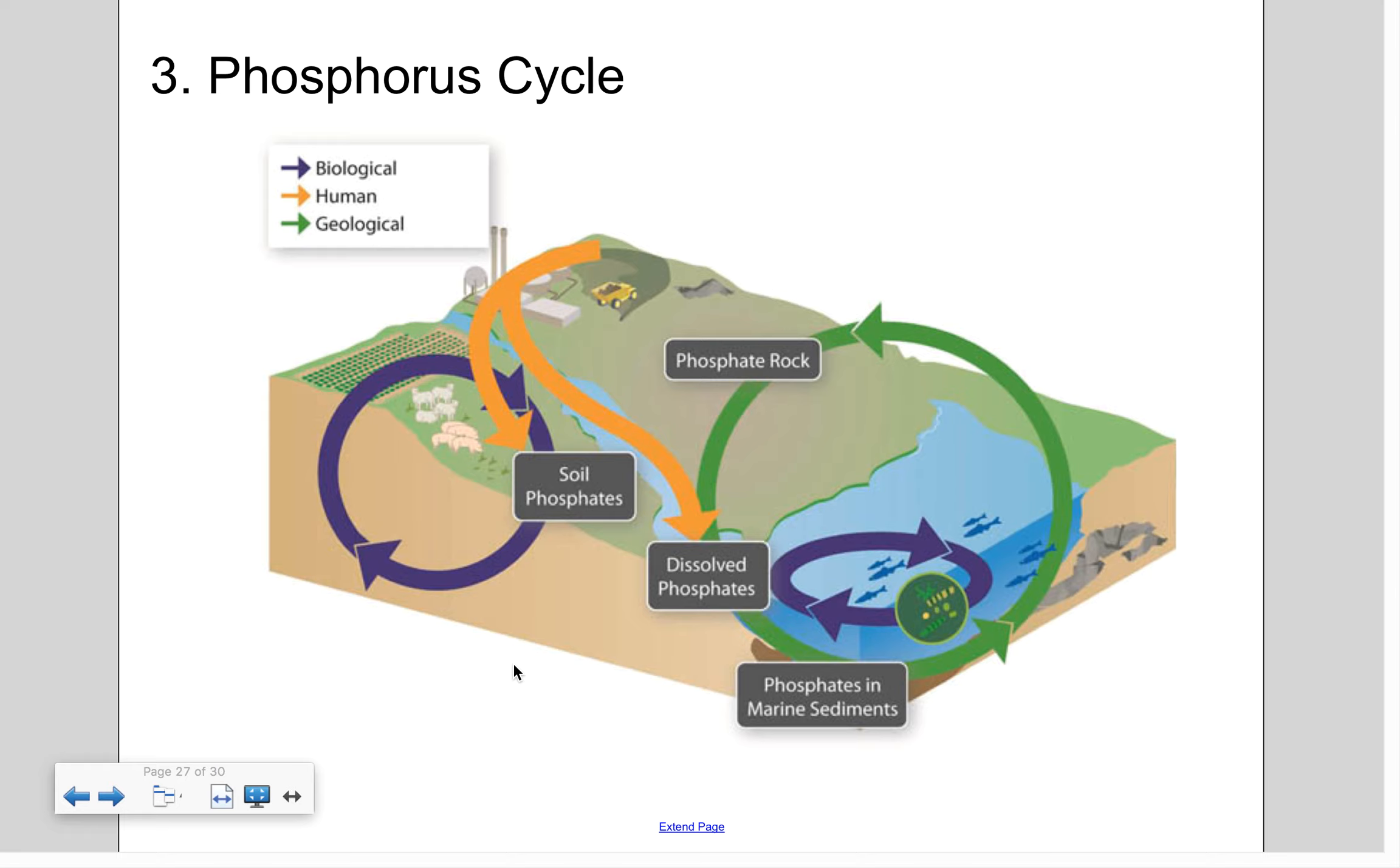Phosphorus cycle is essential to life because it's found in nucleic acids. So unlike carbon, oxygen, and nitrogen, phosphorus does not cycle through the atmosphere. You can see that it's not in the air at all. It's in the ground.